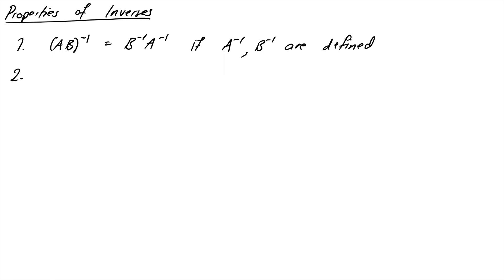Second property, (cA) inverse. Okay, I'm taking a scalar times A and the inverse now. That's just equal to 1 over c times A inverse for some non-zero scalar c. Okay, you can see this one by multiplying it out as well. 1 over c times A inverse times cA. Well, I can bring all the scalars out to the front. So that equals c over c times A inverse times A, which is just 1 times the identity, which is just the identity as we would have hoped.